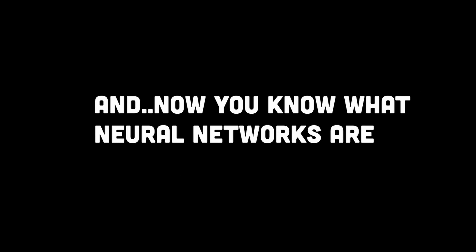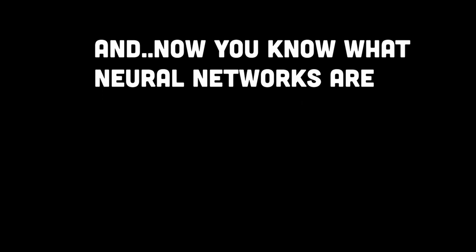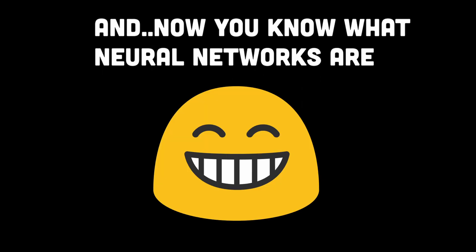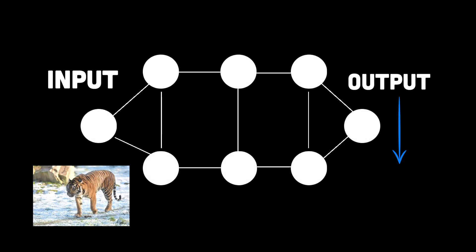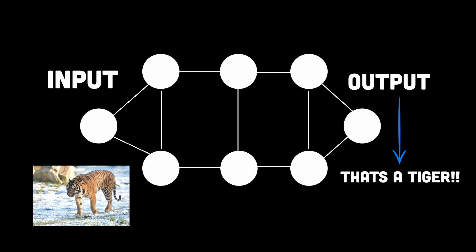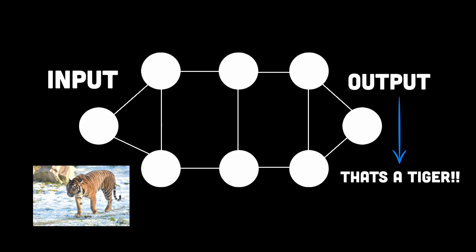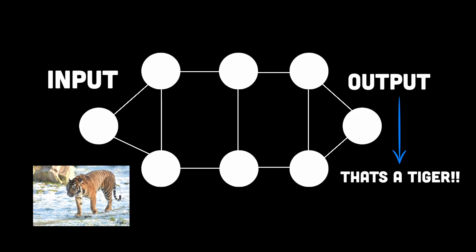In short, that's how a neural network works. Once we are done optimizing, we can save the neural network and load it whenever we want to. Then we can expose it to tiger images it has never seen before, and in most cases they will be correctly classified.